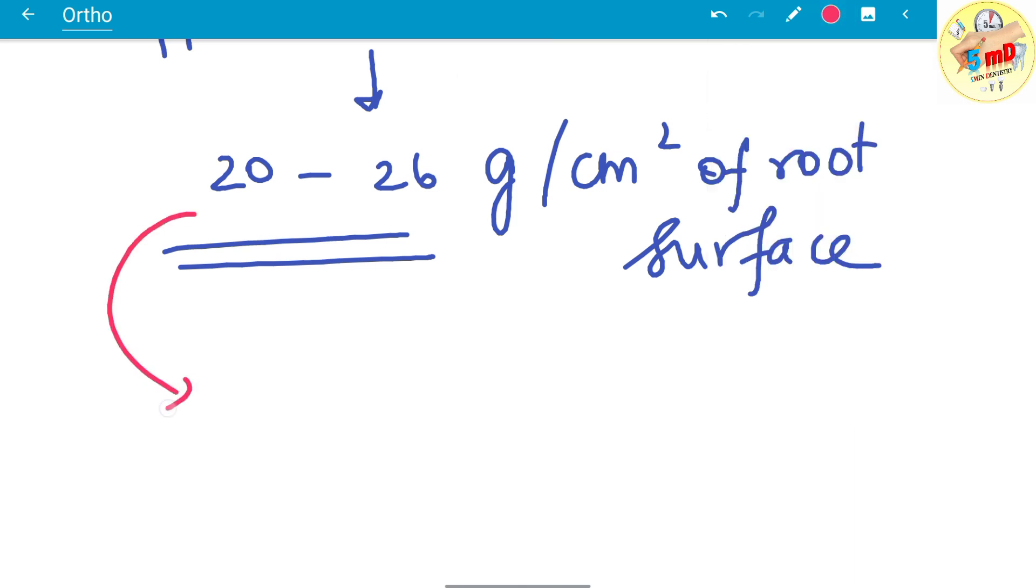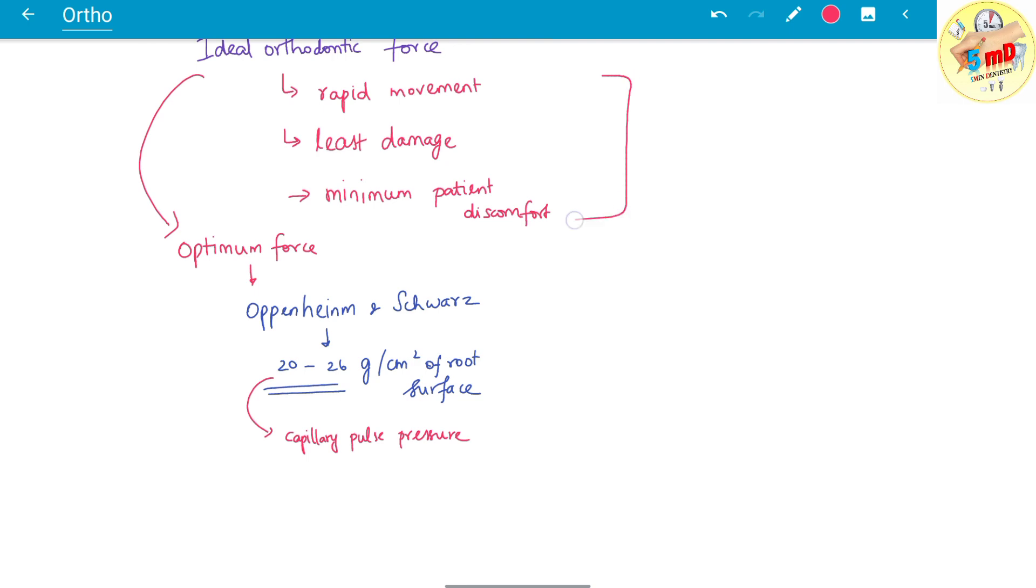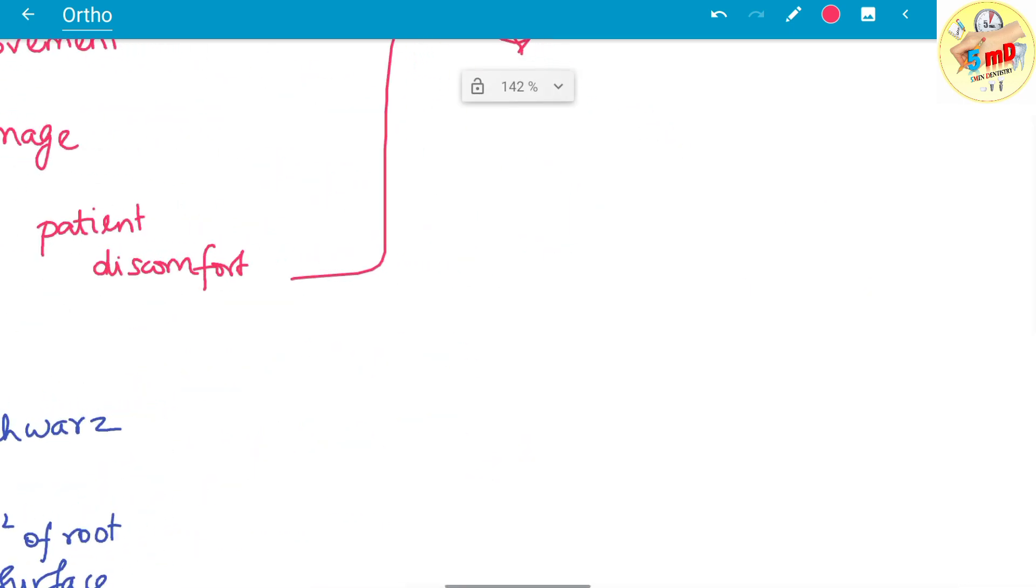Therefore the blood vessels do not get occluded or do not get teared. Upon this 20 to 26 grams per centimeter square of root surface is considered more or less the ideal or the optimal orthodontic force.